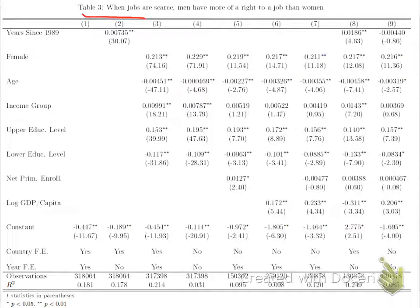Let's take a look at an example regression. This is from a paper by Charles Kenney and his co-author Dev Patel. The paper is called 'Gender Laws, Values, and Outcomes: Evidence from the World Values Survey.' The World Values Survey is a survey done around the world with about 300,000 respondents asking a whole set of questions about values. You can see here the number of observations is very large: 300,000.